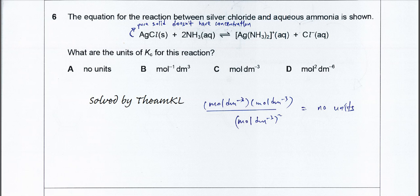Okay, so for this one we need to get the units of Kc from the reaction given. Silver chloride reacts with ammonia to form the complex ion and this counter ion, the chloride.